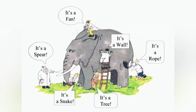After that, all six men started arguing with each other because they had different opinions about the elephant. For the first man, the elephant was like a wall, but for the remaining five men it was something else. So they didn't agree with each other. But if we look at their opinions carefully, we will find that all of them were correct because each one of them touched a different part of the elephant and described what they felt.